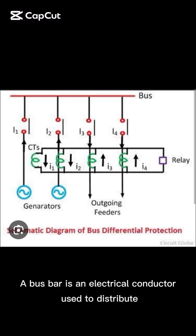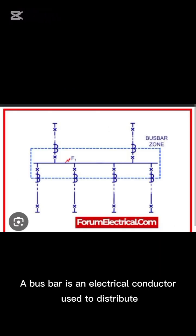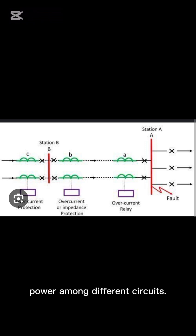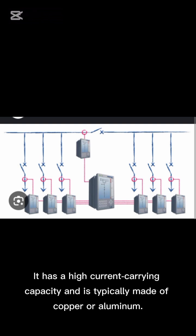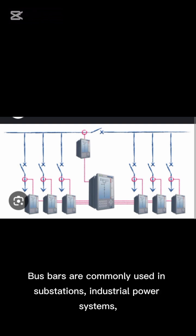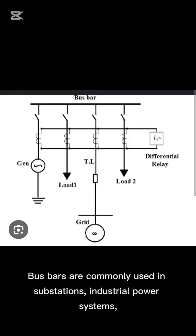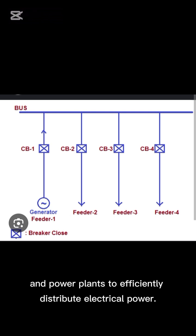What is a bus bar? A bus bar is an electrical conductor used to distribute power among different circuits. It has a high current carrying capacity and is typically made of copper or aluminum. Bus bars are commonly used in substations, industrial power systems and power plants to efficiently distribute electrical power.